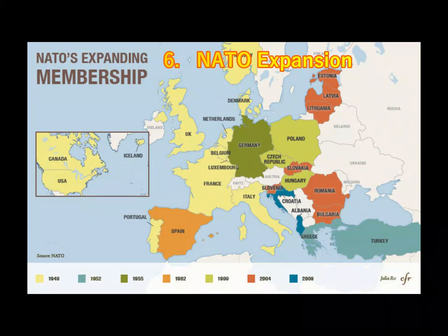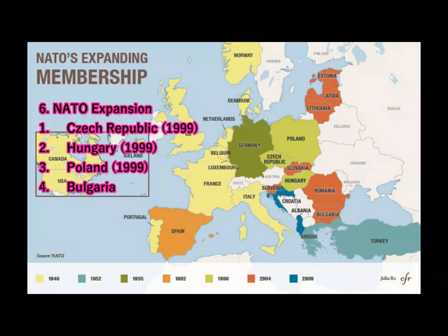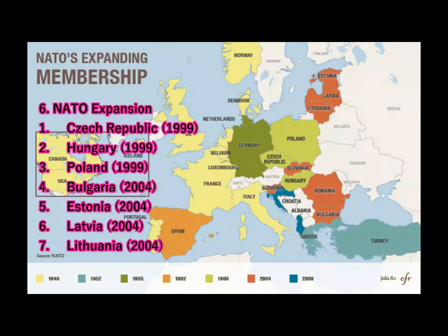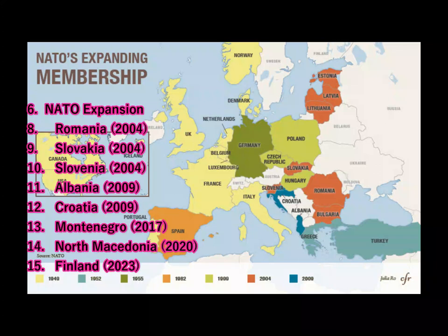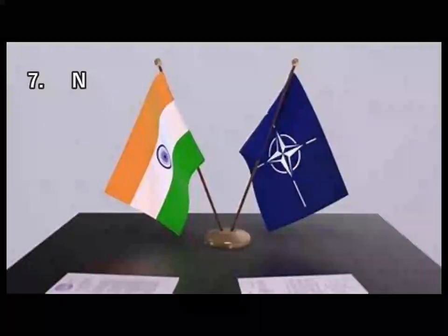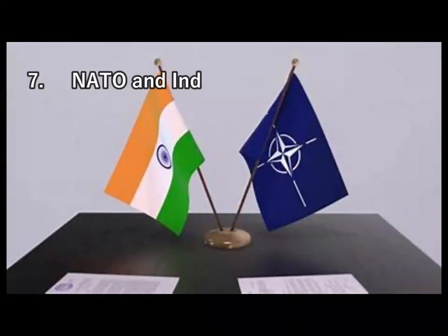The primary reason for the ongoing conflict between Russia and Ukraine is the desire of Ukraine to join NATO. The countries that have joined NATO after the USSR's disintegration are: Czech Republic, Hungary, Poland, Bulgaria, Estonia, Latvia, Lithuania, Romania, Slovakia, Slovenia, Albania, Croatia, Montenegro, North Macedonia, and Finland.